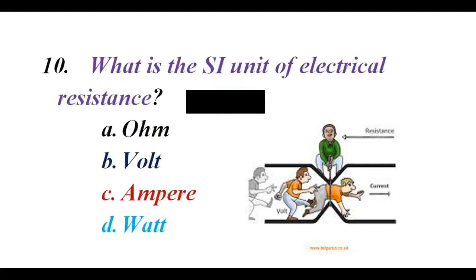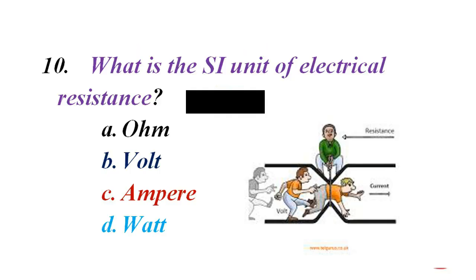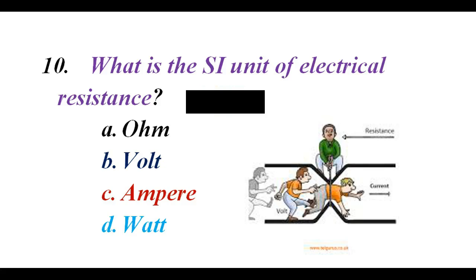What is the SI unit of electrical resistance? A. Ohm. B. Volt. C. Ampere. D. Watt. The correct answer is A. Ohm.